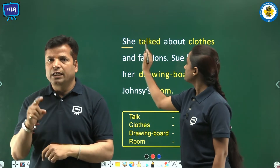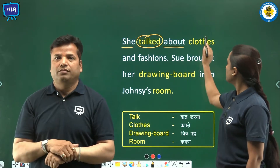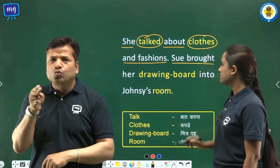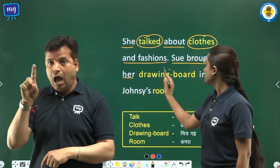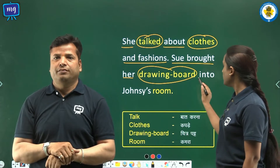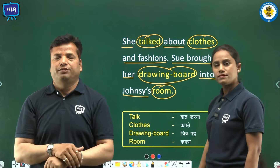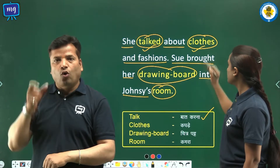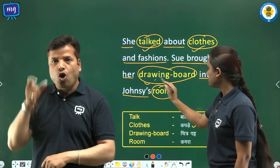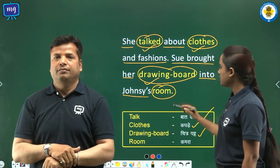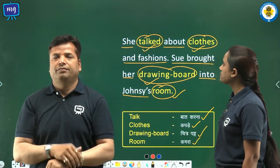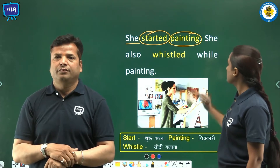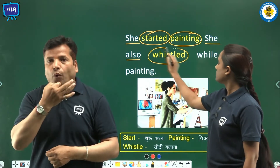She talked about clothes and fashions. Sue brought her drawing board into Johnsy's room and started painting. She also whistled while painting.